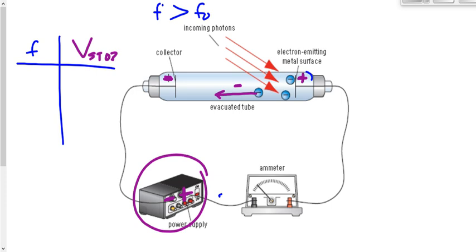How do we know when the electrons are stopped? We can't see them. When the electrons have stopped, there's no current, so the reading on the ammeter goes back to zero. When there's a current flowing through, electrons are moving. When there's no current flowing through, the electrons have stopped. That's how we know we've applied the right potential difference to stop the electrons — because there's no current. So what you do is record the frequency of the photon and then the stopping potential that was required to stop the ejected electron.